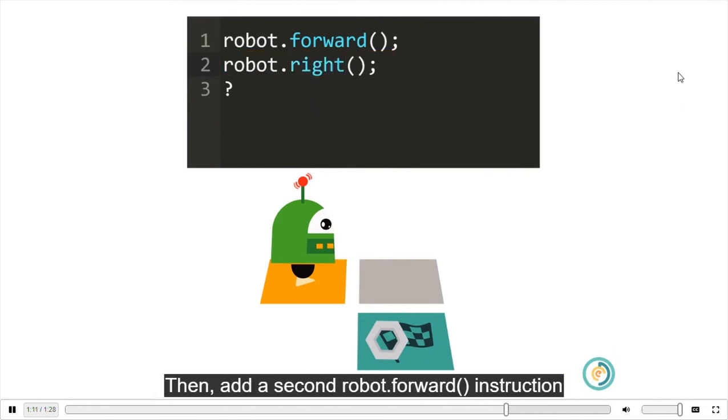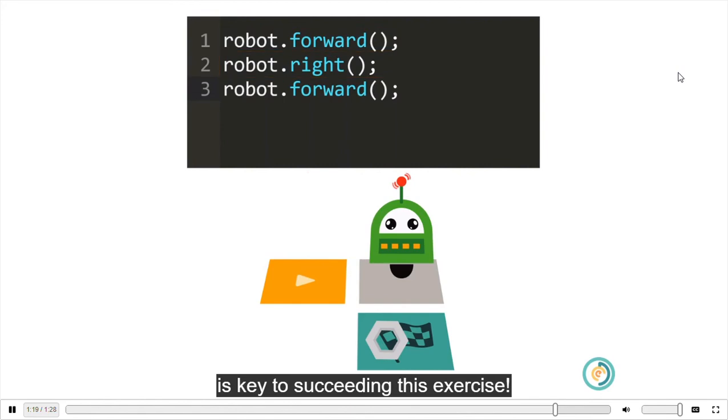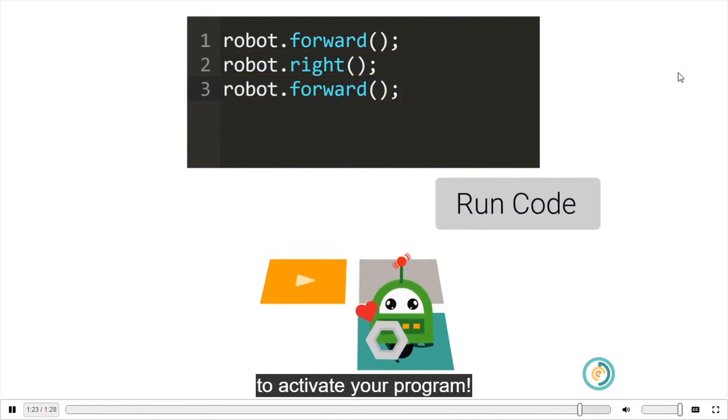Then, add a second robot.forward instruction to make the robot move to the goal. Remember, the order of the instructions is key to succeeding this exercise. Lastly, don't forget to click the run code button to activate your program.